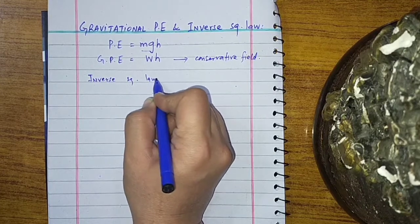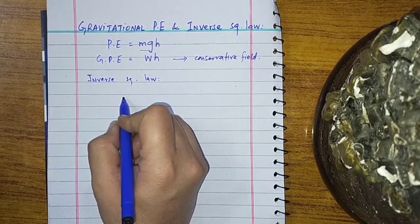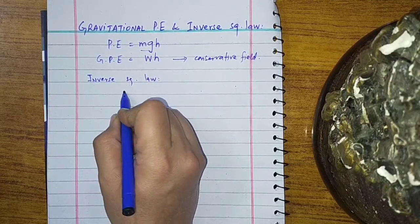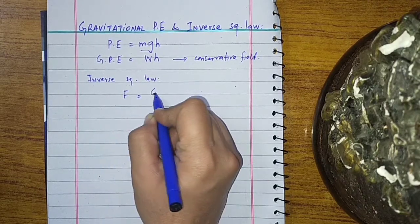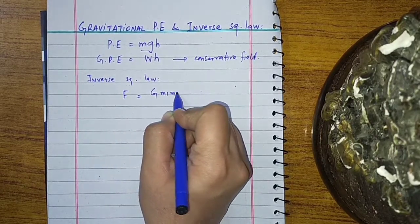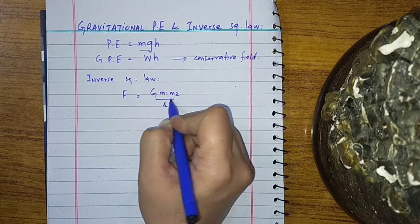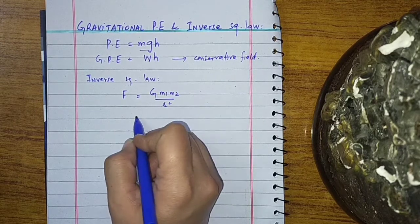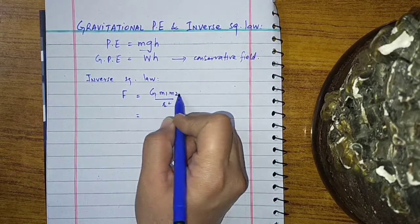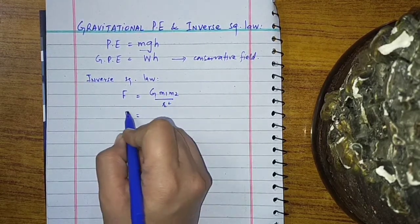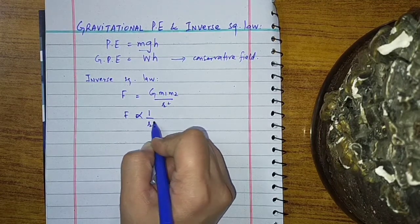The Inverse Square Law: Newton's law of gravitation is also known as the Inverse Square Law. We know that F is equal to G M1 M2 over R squared. Here we see that F is inversely proportional to R squared.